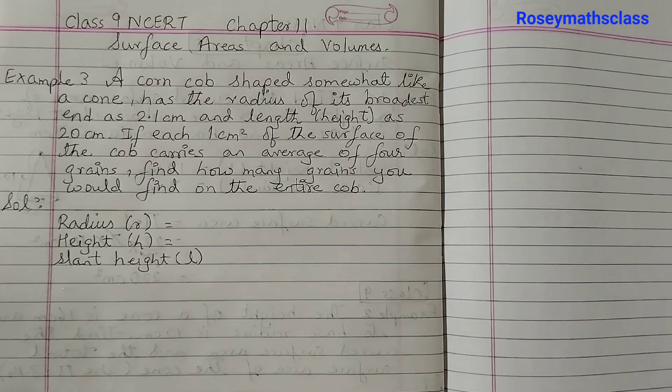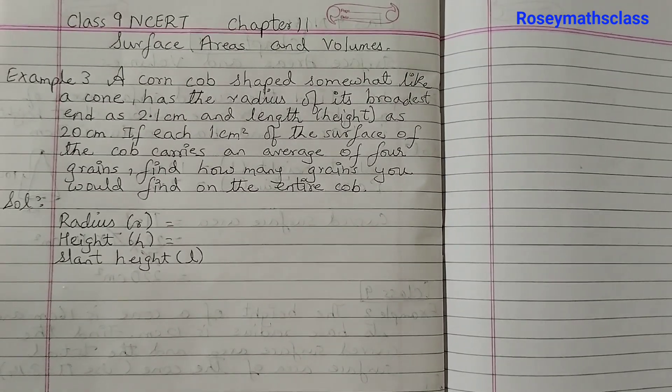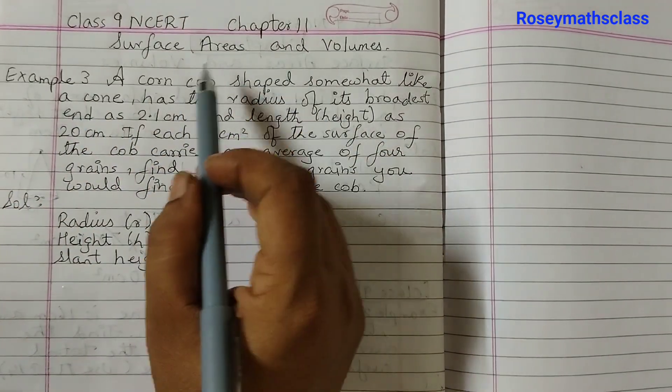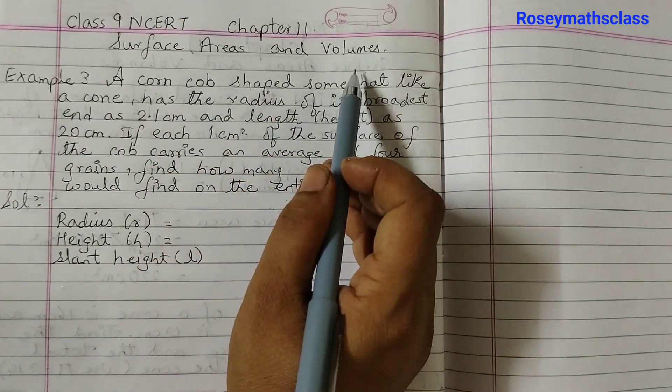Hello everyone, welcome back to Rosiematt's class. Today we shall discuss example number 3 of chapter 11, Surface Areas and Volumes.